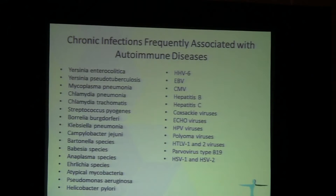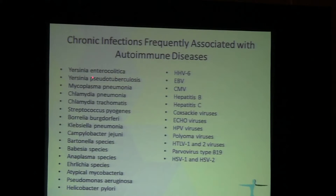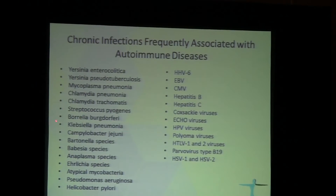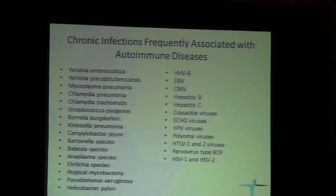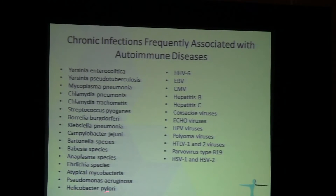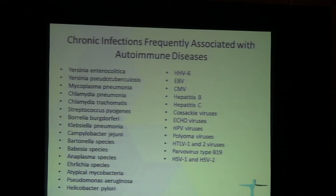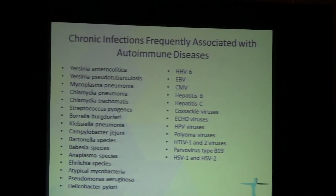These are the infections which frequently associate with autoimmune diseases: Yersinia species, Mycoplasma pneumoniae, Chlamydia pneumoniae, Chlamydia trachomatis, Streptococcus, Borrelia, Klebsiella, Campylobacter, Bartonella, Babesia, Anaplasma, Helicobacter pylori, Pseudomonas, atypical mycobacteria, and various viruses. The list could probably be doubled or tripled based on our current knowledge.